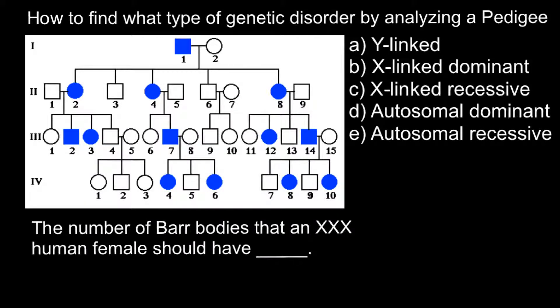Hello and welcome to Nikolai's genetics lessons. In this video I'm going to explain how to find the type of genetic disorder by analyzing a pedigree. We also have a second question about Barr bodies. For the first question, we have to analyze this pedigree and choose the correct answer on the right. If you need time, pause the video, try to choose the correct answer, and when you're ready run the video again to compare your answer with my explanation.